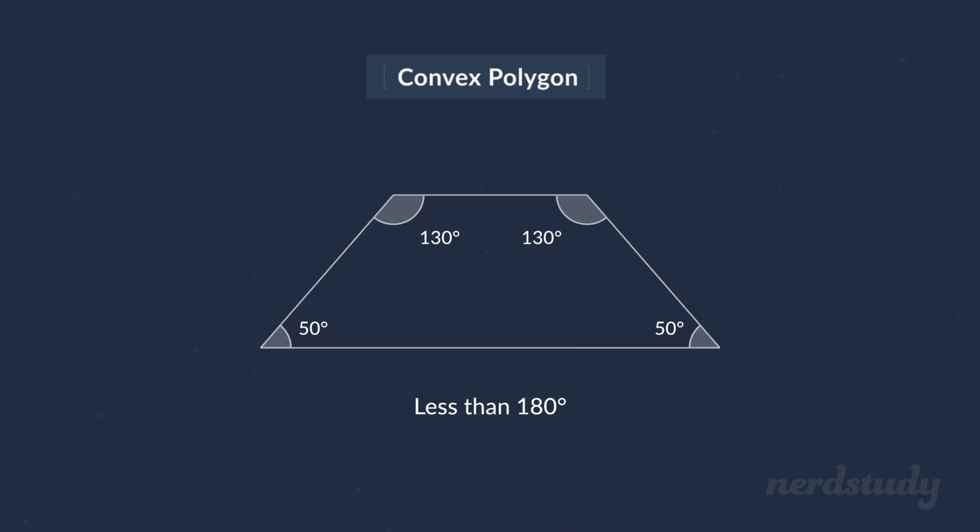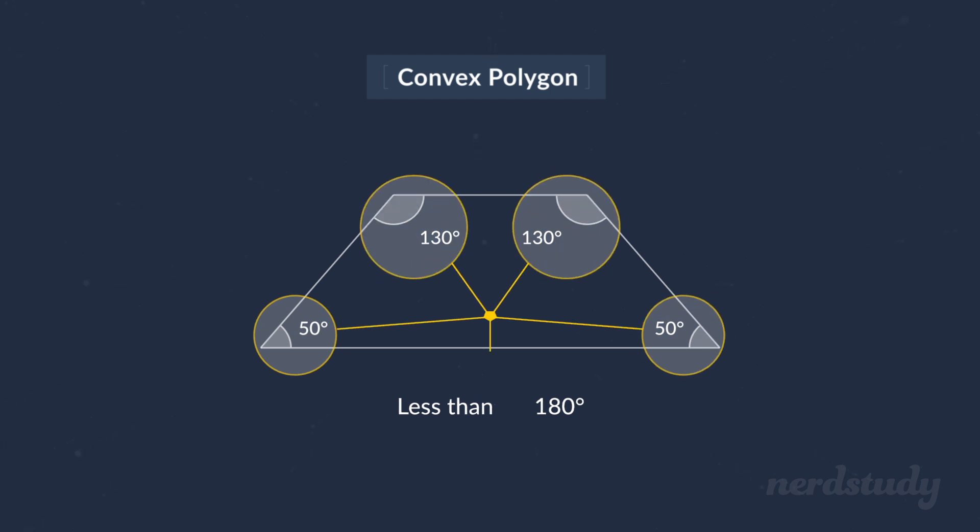The differentiating characteristics of a convex polygon is that each angle within the polygon must be less than or equal to 180 degrees.